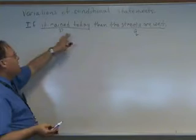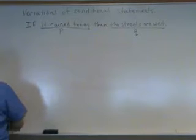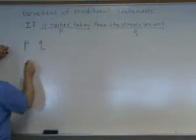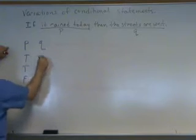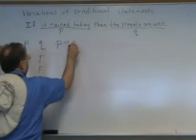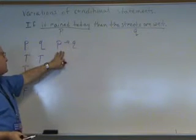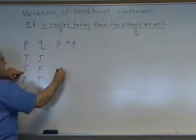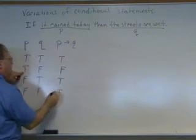Here's P and here's Q. True, true, false, false for P and true, false, true, false for Q. We learned earlier that the only way a conditional statement can be false is if the condition is met and the promise is not kept. So only one part is false and all the rest are true.